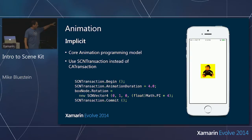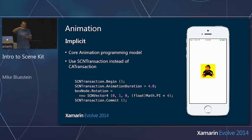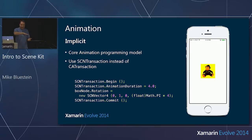An implicit animation: I create a transaction. Inside the transaction I specify all the things I want to animate — the values. It's called the model property, the thing you're going to change to.